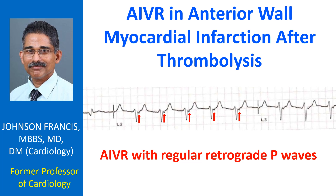The retrograde atrial activation will result in regular cannon waves in the jugular venous pulse. Even though the QRS complex is almost 120 ms in width, at one look it may appear to be not that wide, and the AIVR can be missed.